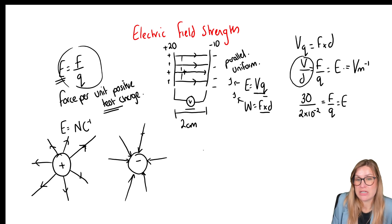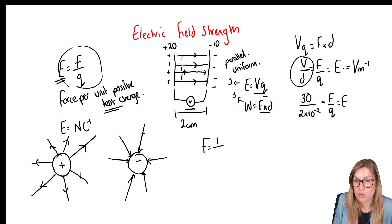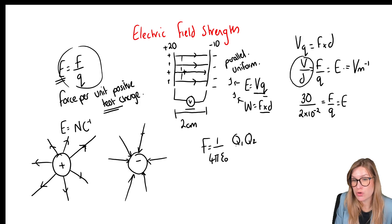The next thing we need to know is Coulomb's Law. The force equals 1 over (4π × epsilon naught) multiplied by charge 1 times charge 2 divided by the distance between them squared.